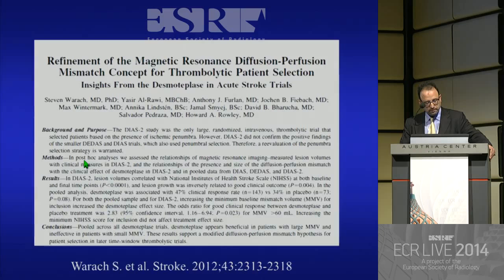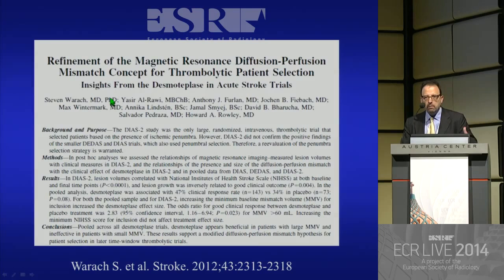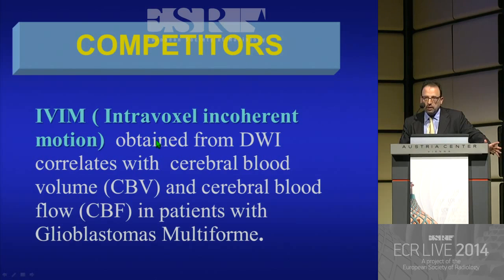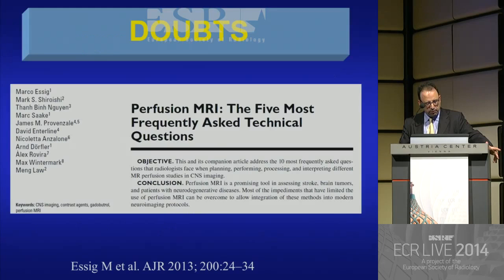In reality, we now face a redefinition of the concept of perfusion and penumbra. It's an open issue with some conflicted questions to answer. For instance, we have seen alternatives and competition regarding perfusion. To look for other ways to determine the penumbra, some authors proposed clinical diffusion or angio-diffusion. In talking about tumors, some authors proposed e-beam. But maybe we need to work much better with perfusion, because perfusion is probably the best sequence we have to study the brain.